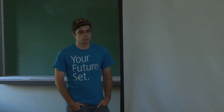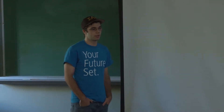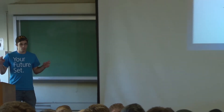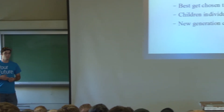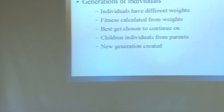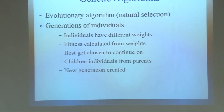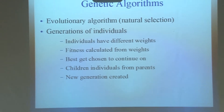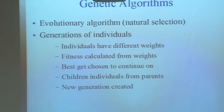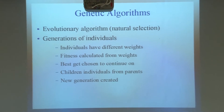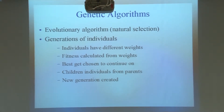Genetic algorithms are evolutionary algorithms based on natural selection. They work on generations of individuals, or test cases. Each of them have a different weight, and fitness is calculated from these. The algorithm takes the best fitnesses and keeps them around based on a certain percentage that you decide to keep.